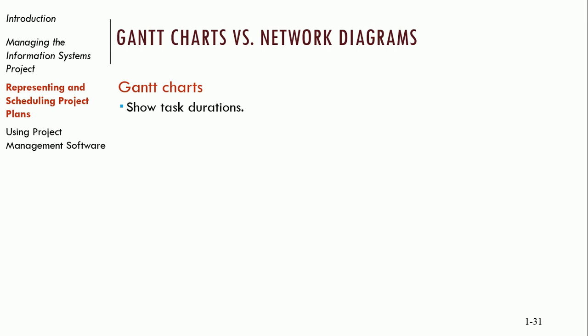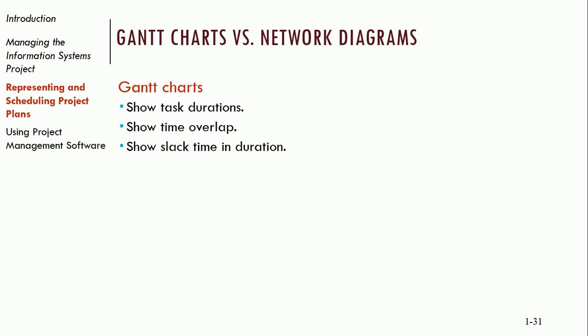A Gantt chart is basically a chart that shows you task durations. It shows time overlap between different tasks and slack time between tasks — where we can move tasks around and still meet our project goals.